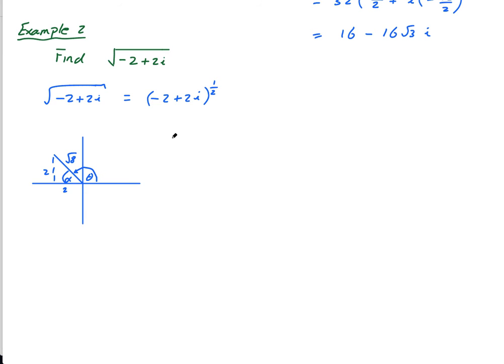So r equals root 8, tan alpha equals 2 over 2 which is 1, alpha equals pi over 4, then theta has to equal pi minus pi over 4, which is 3 pi over 4.